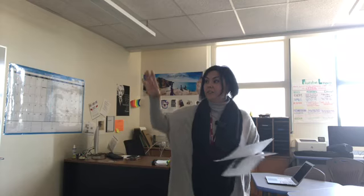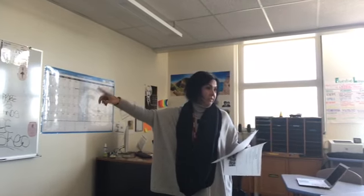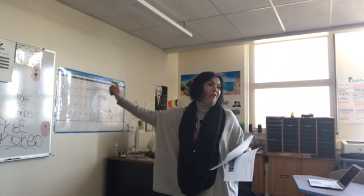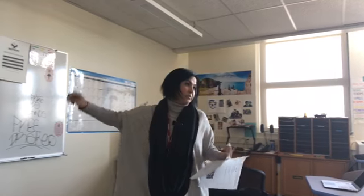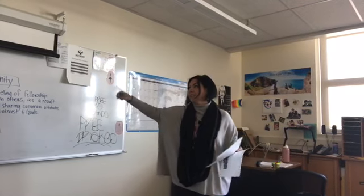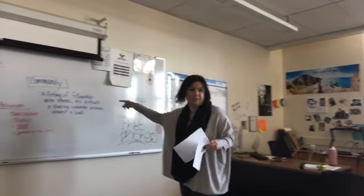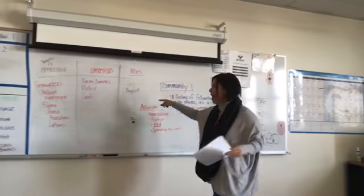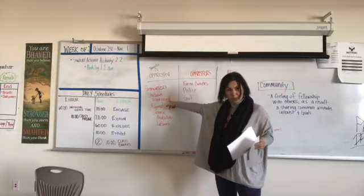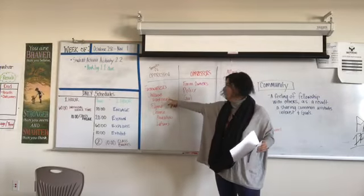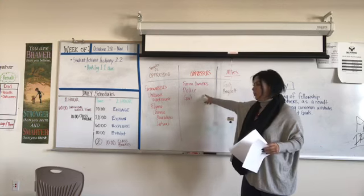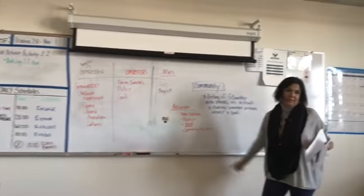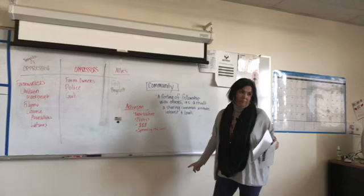So do we have a good understanding of the oppressed, oppressors, and allies? For your final project, it is required that you identify each one of these. So if you were doing the kid in Hong Kong who's organizing all these things, I would need to know who the target of oppression is that he's fighting, who the oppressors are, who the allies are, and what form of activism they're doing.